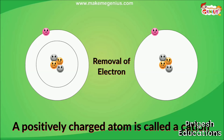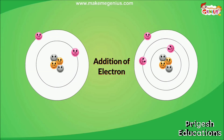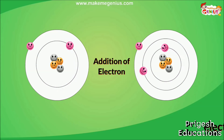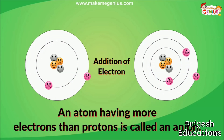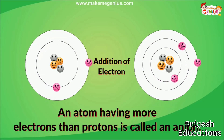Now let's see something opposite. When an atom gains an electron, there are more negative charges and less positive charges. So the atom becomes negatively charged — it has more electrons than protons. You are right. An atom having more electrons than protons is called an anion.